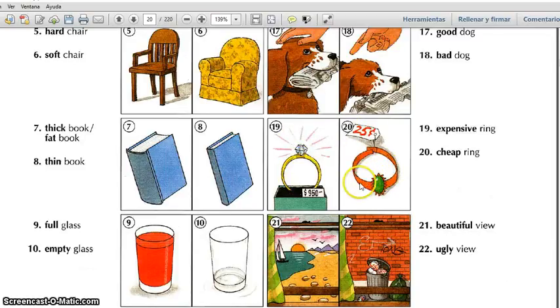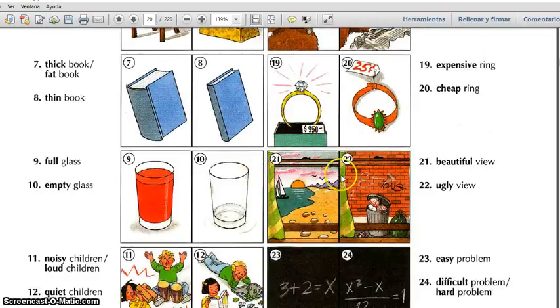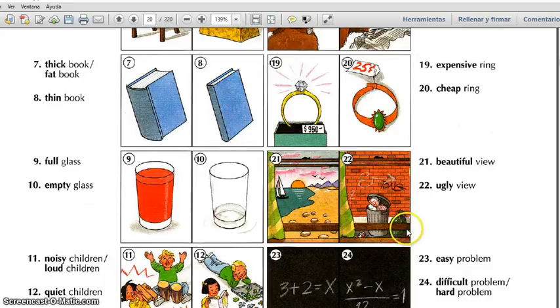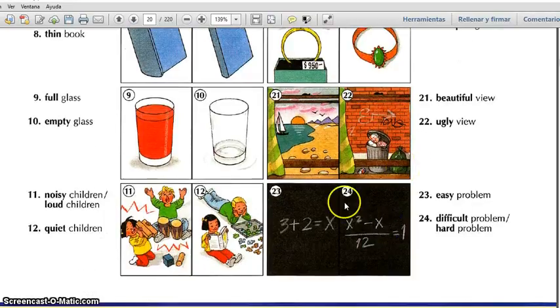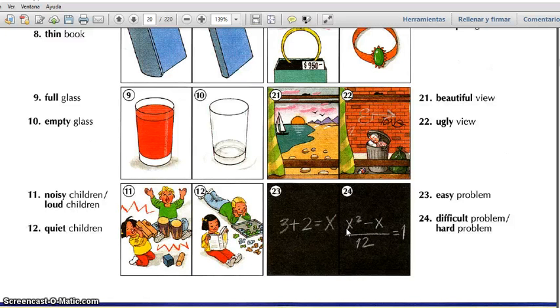21: beautiful view. Beautiful. 22: ugly view. Ugly. 23: easy problem. Easy. 24: difficult problem, hard problem. Difficult, hard.